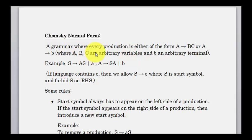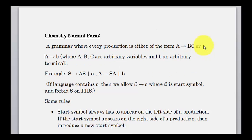A Chomsky normal form is a grammar where a production is either in the form of A goes to BC — one variable pointing to exactly two variables — or A goes to a terminal. It should not have a single variable pointing to just one variable, more than two variables, a terminal and a variable together, or two terminals.